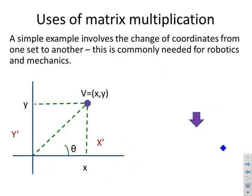Another use of matrix multiplication. A simple example that will come up in robotics and mechanics is the change of coordinates from one set to another. We've got a point v which is coordinates x and y defined against an axis x and axis y.